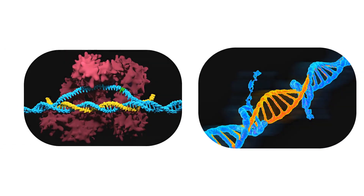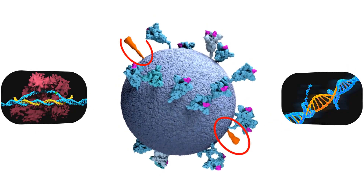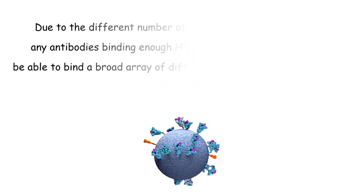However, the reverse transcriptase enzyme often does a poor job of copying the viral RNA. This results in DNA copies of the viral RNA that are mutations — changes from what the original RNA version of the virus coded for. If these mutations affect the genes for the spike proteins such as gp120, the spike proteins will have a different shape. With each mutation comes the potential for a new shape to the spike protein, resulting in a diverse array of spike protein shapes for HIV.